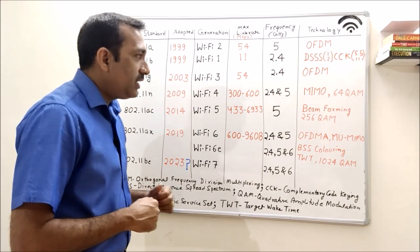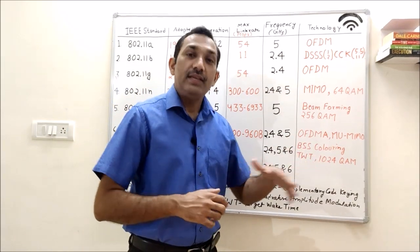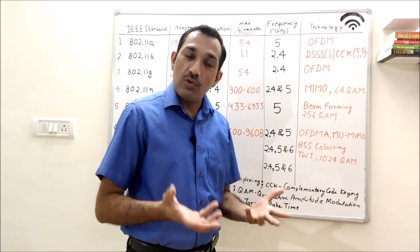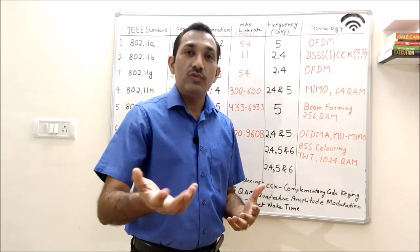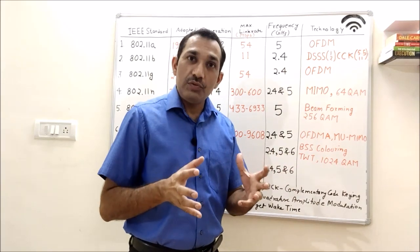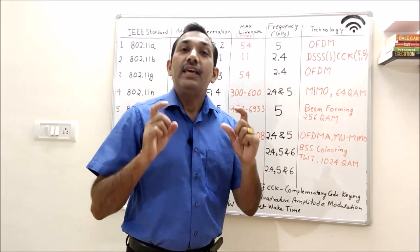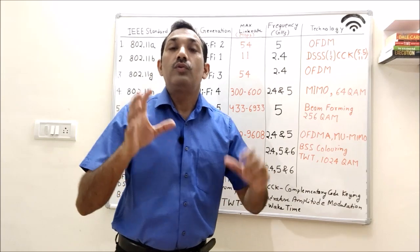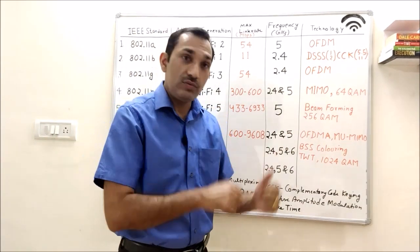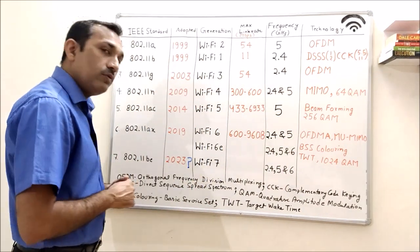Similarly, OFDMA is an extension of OFDM digital modulation for multiple users. Multiple access is achieved by assigning a set of sub-carriers to a user. So, we can assign different sets of sub-carriers to different users.